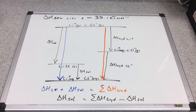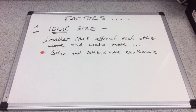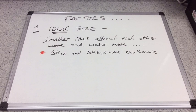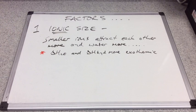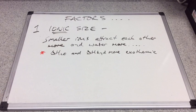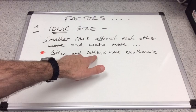Now we'll look at the factors. The first factor influencing the magnitude of these enthalpy changes is ionic size. Smaller ions — the smaller the ionic radius — the greater the attraction. So in the case of lattice enthalpy, where the positive and negative ions attract each other, the smaller they are, the more exothermic the lattice enthalpy will be. The same applies to attraction between ions and water molecules: the smaller the ion, the more exothermic the enthalpy change of hydration.